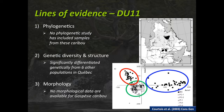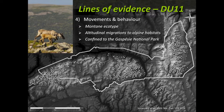About morphology, we have no morphological data for that population either, so we cannot base our decision about attributing a DU to that population on that line of evidence. Regarding movement, here you have a digital elevation model of the caribou range in Gaspésie — it's quite small.